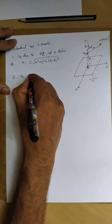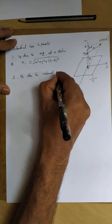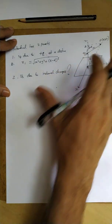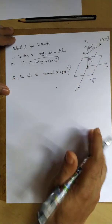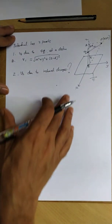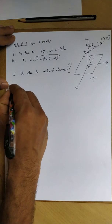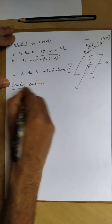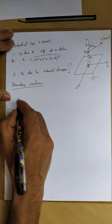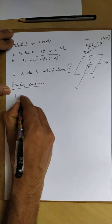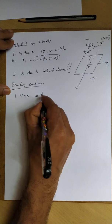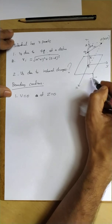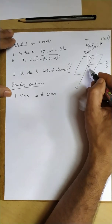The second part is the potential V2 due to induced charges on the conducting plate. Now let me introduce the method of images and find the boundary conditions. We will solve for the boundary conditions. The first boundary condition is: V equals zero at z equals zero, since the conducting plate is grounded — potential is zero on the grounded plate.